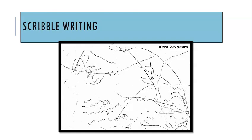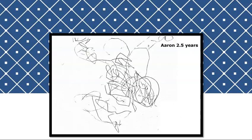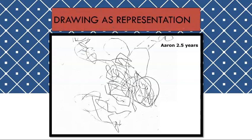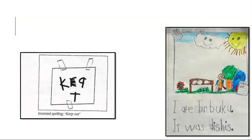Let's see the next one — what stage would you say this child is in? If you said drawing as a representation, you'd be correct. You can see there are no scribbles and no print-like production — it's just lines that might represent a jungle, a tree, or a cat. It's not something that can be identified as writing or even looks like how writing might appear.